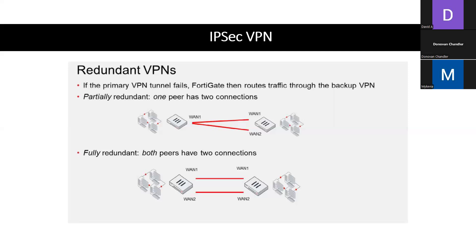Partially redundant — on one peer, usually the hub or HQ, a backup ISP is available if the main ISP is down. Each VPN terminates on different physical ports only on one side, so the FortiGate can use an alternative VPN. On the other pair, each VPN terminates on the same physical port, so the spoke is not fault tolerant. So HQ is redundant but the branch is not — that's partially redundant.